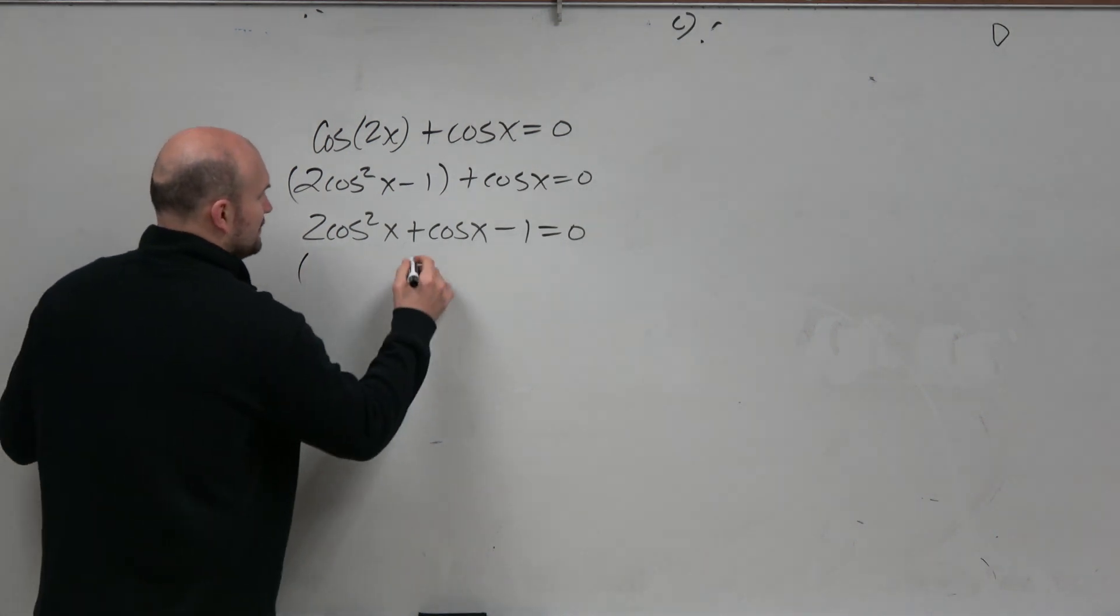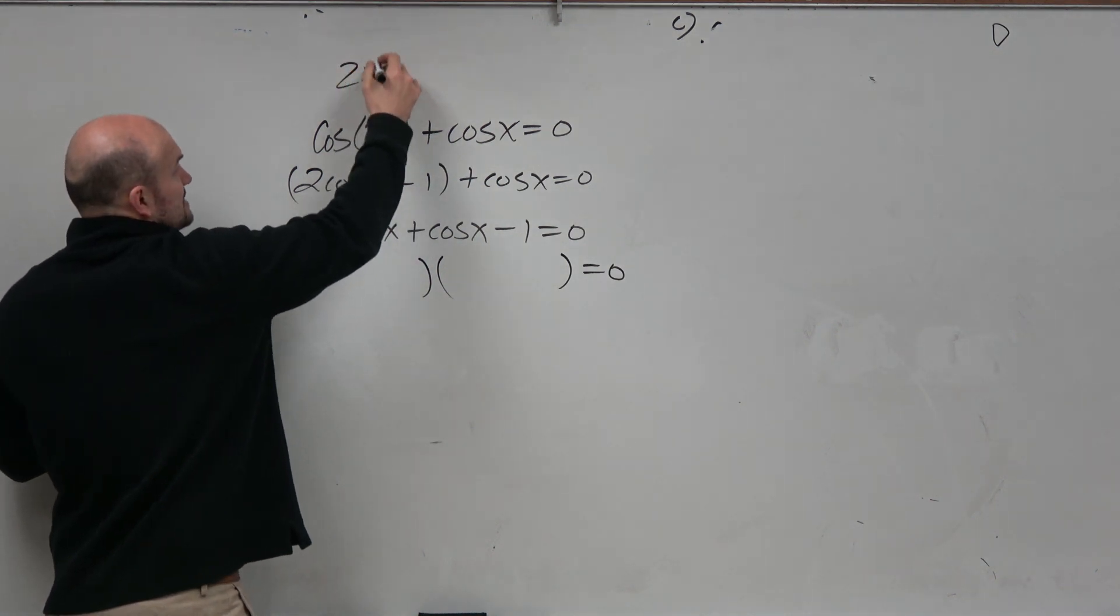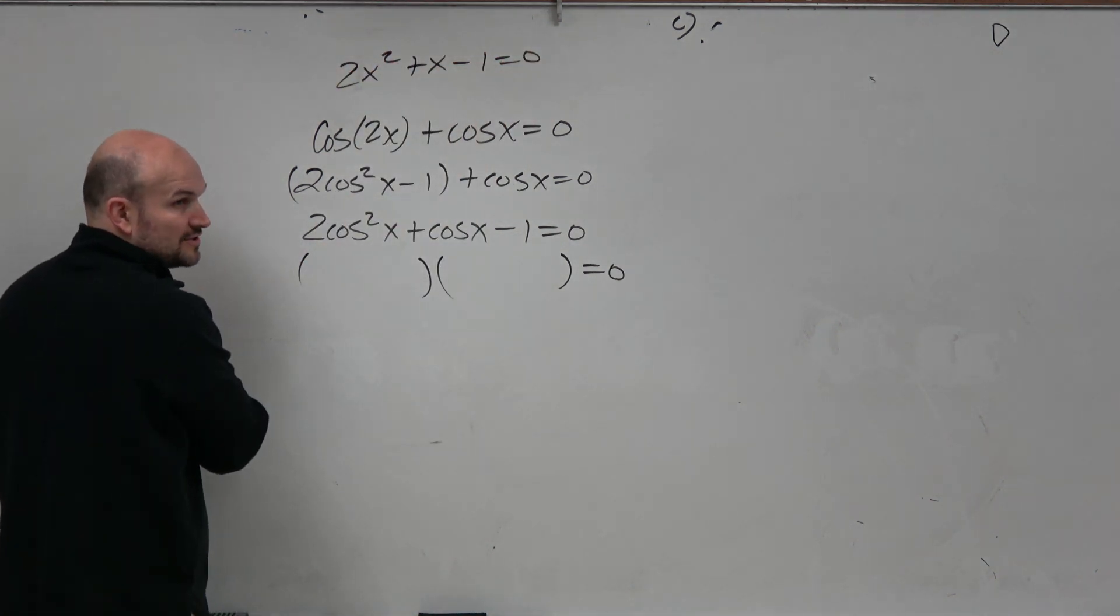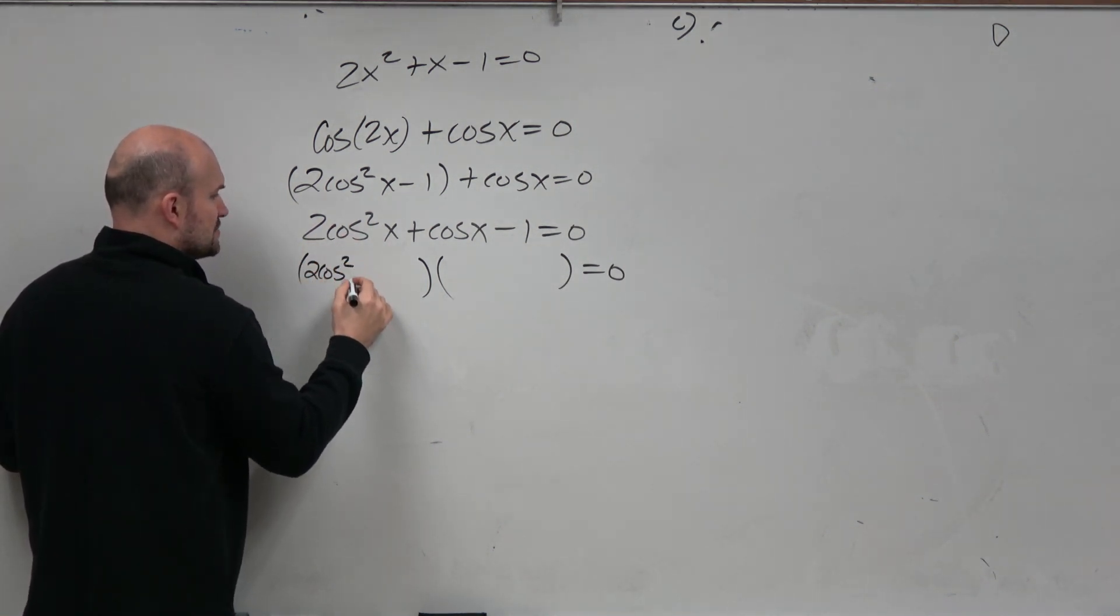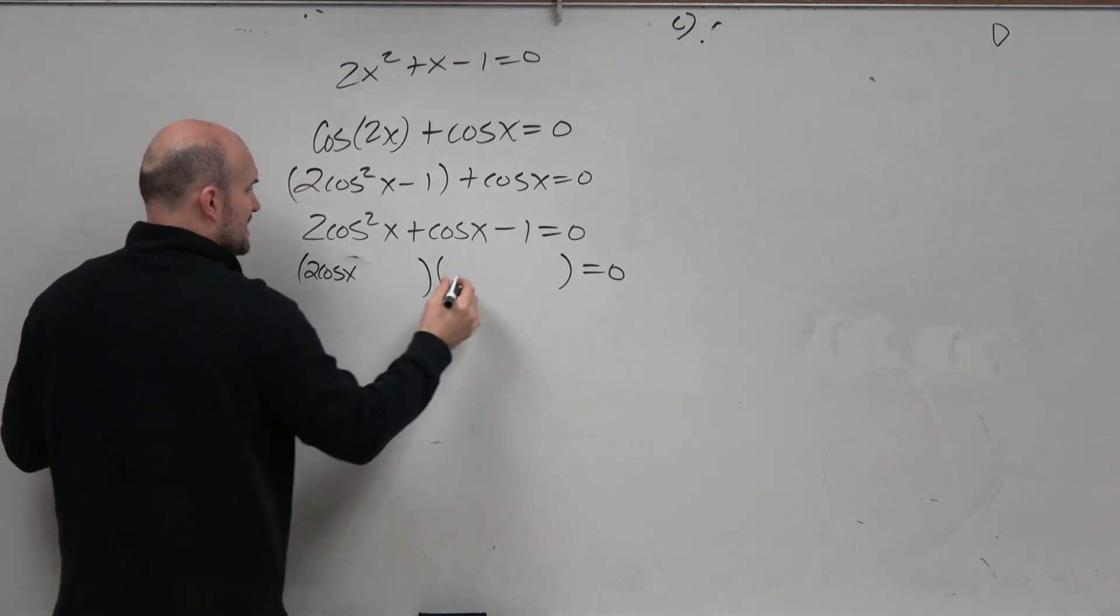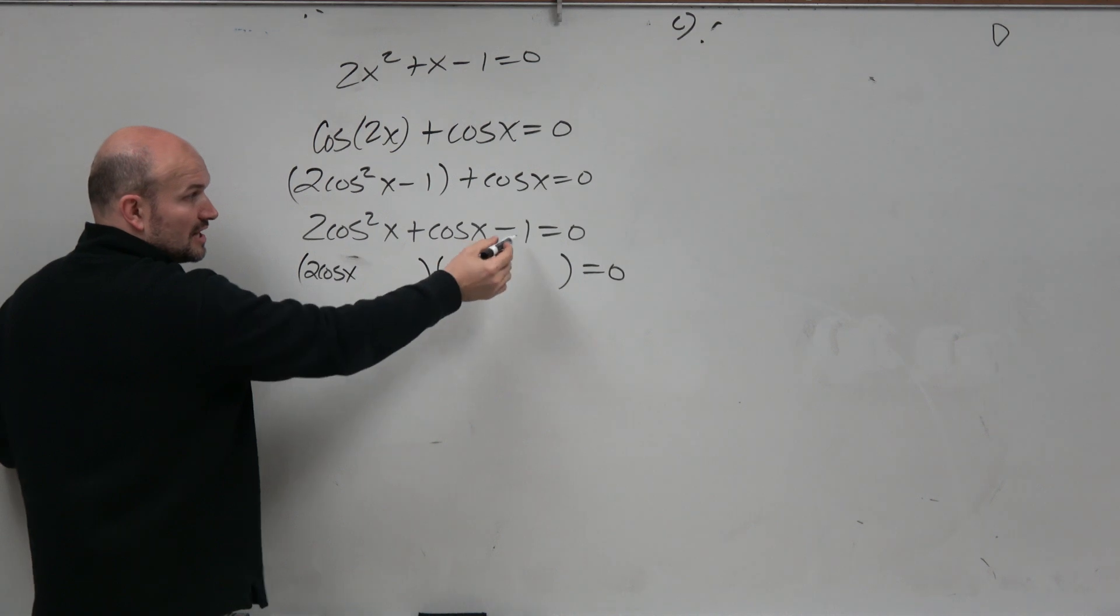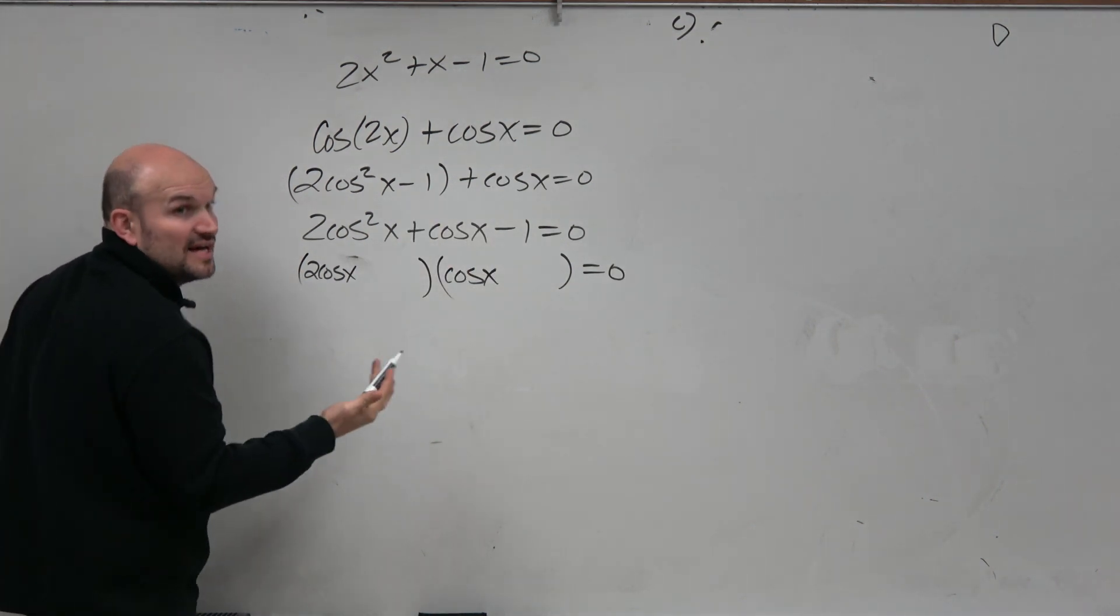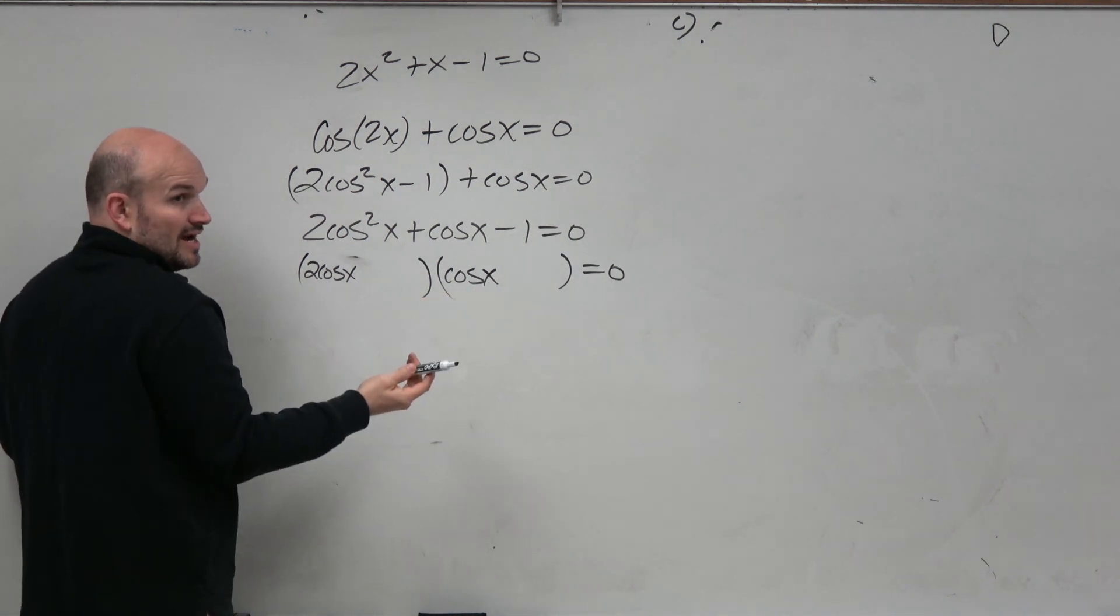If you get stuck with this or you hate factoring, then just use x's: x² + x - 1 = 0. Solve that by factoring. The first two terms give us 2cos²x, so that's 2cosx times cosx. The last two terms give me negative 1, so it's positive 1, negative 1.